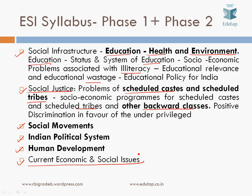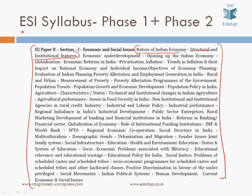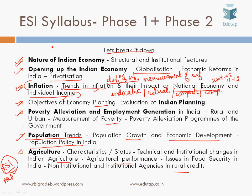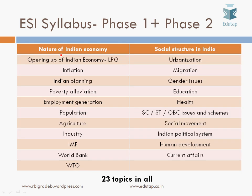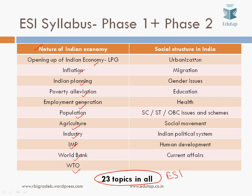We have now categorized the ESI syllabus into subsections by breaking it down, and we can see that a total of 23 topics have to be covered. The topics are: opening up of the Indian economy, LPG (liberalization, privatization, globalization), inflation, Indian planning, poverty alleviation, employment generation, population, agriculture, industry, IMF, World Bank, WTO, urbanization, migration.